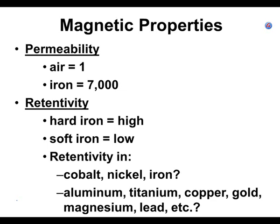If you can't pick something up with a magnet, it will always have zero retentivity. Aluminum, titanium, copper, gold, magnesium, lead — you cannot pick any of those things up with a magnet, and therefore they will also have zero retentivity. You cannot magnetize them.